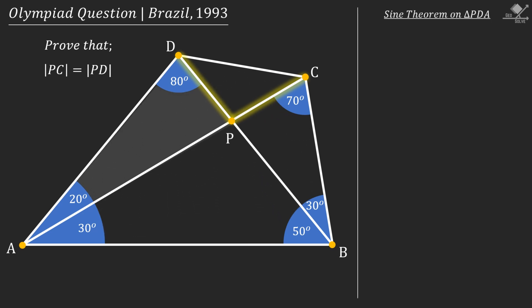Now let's apply sine theorem on triangle PDA. We can write PD over sine 20 equals PA over sine 80, and let's write it in this form and call it equation 1.